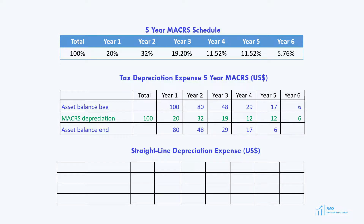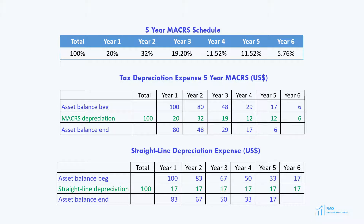Compare this to the straight-line depreciation method. Our straight-line depreciation expense is simply the value of the asset, which is 100, divided by its useful life of 6. You can see that in the first 3 years, our depreciation expense is higher for MACRS, which will result in lower tax payables compared to tax expense under the straight-line depreciation method.